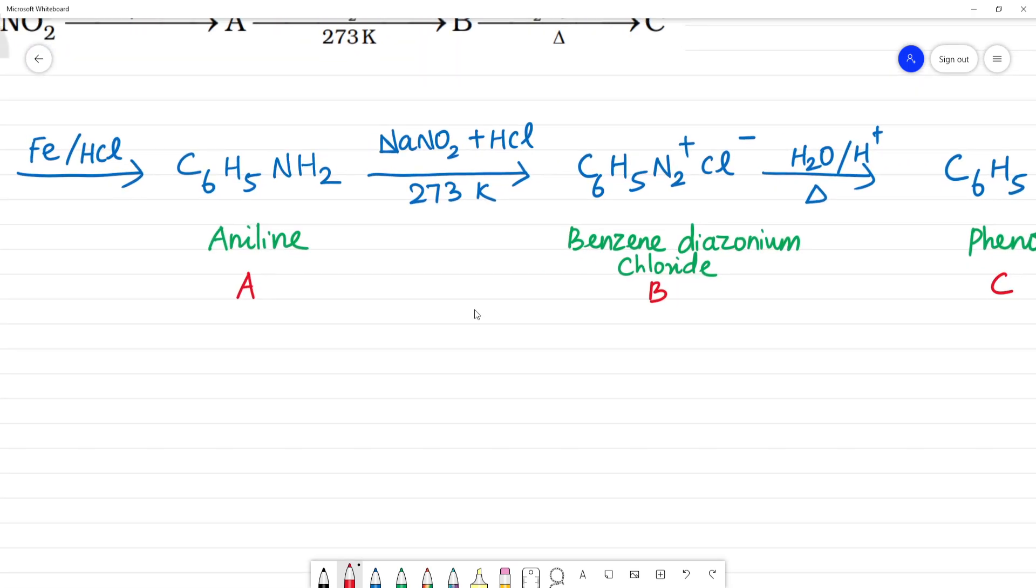So what is A? A is aniline. B is benzene diazonium chloride and C is phenol.